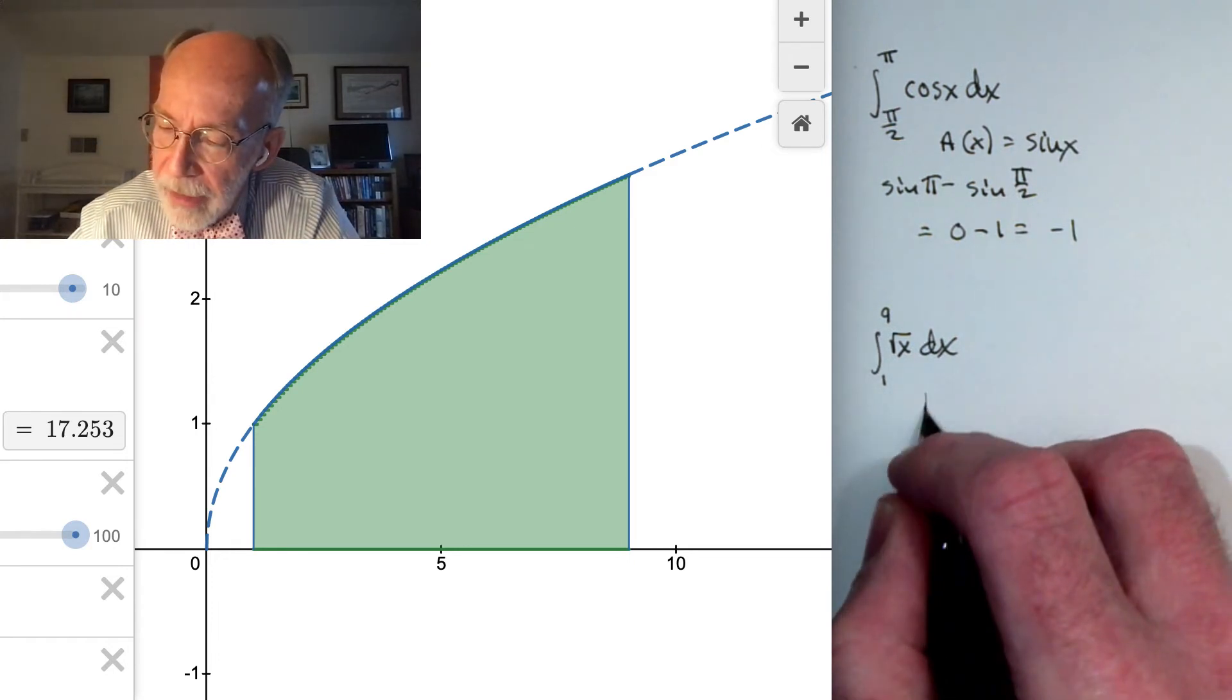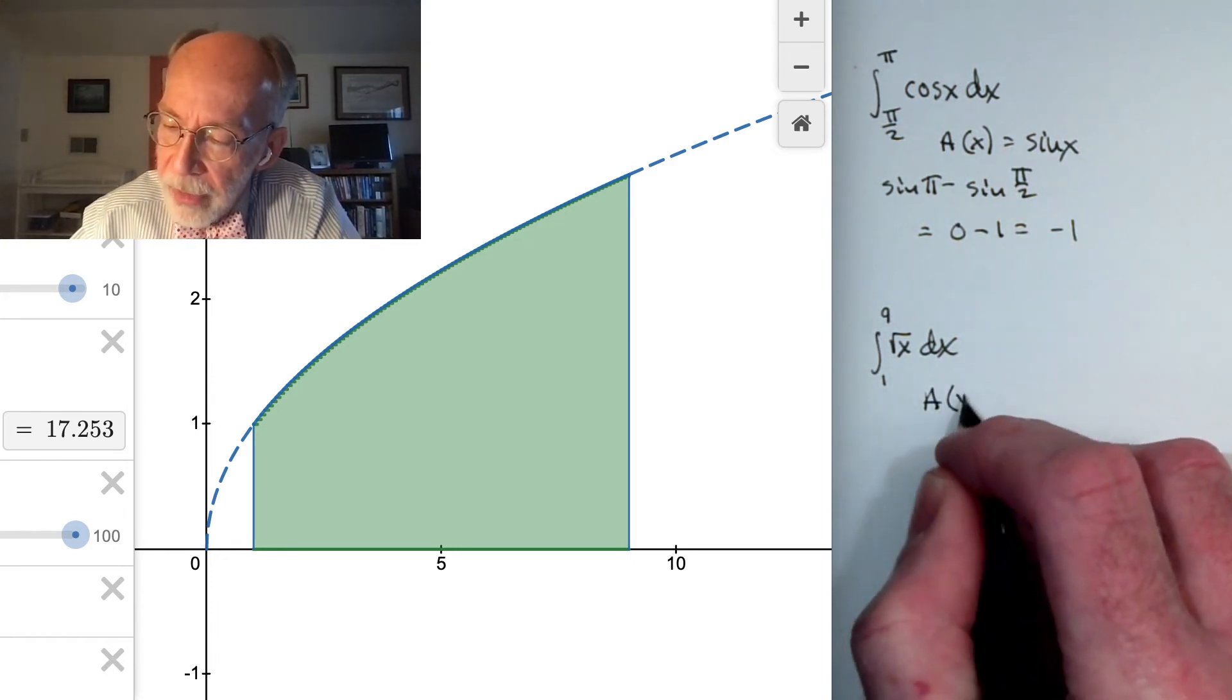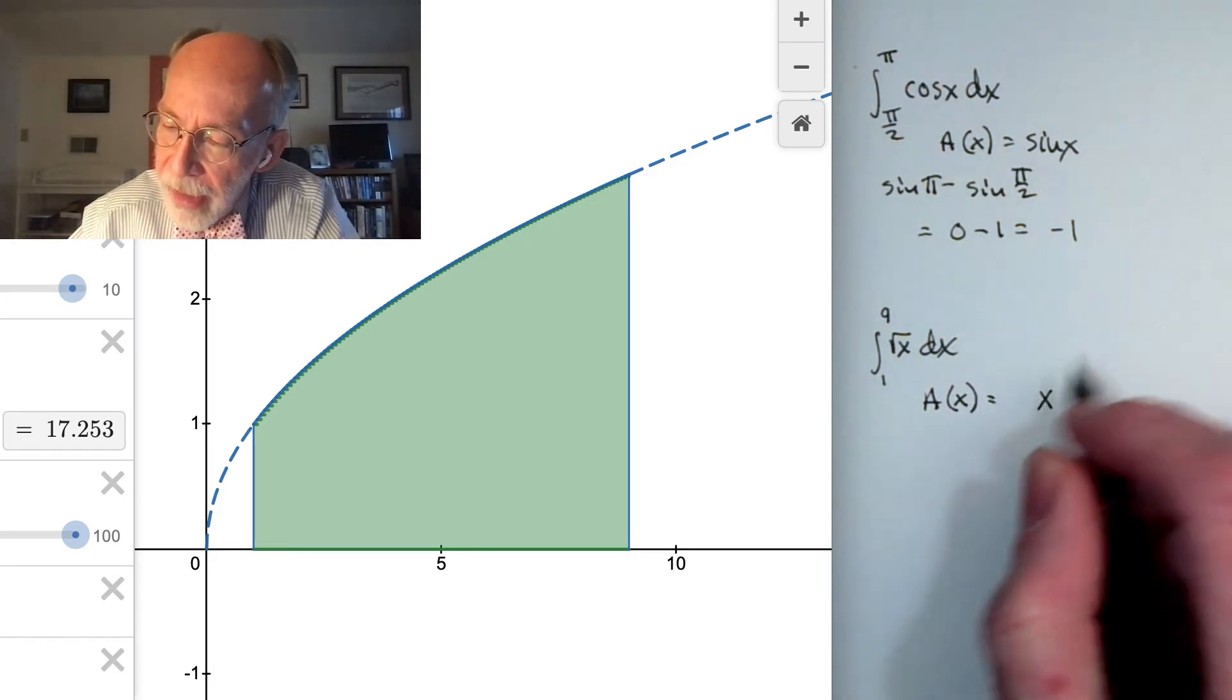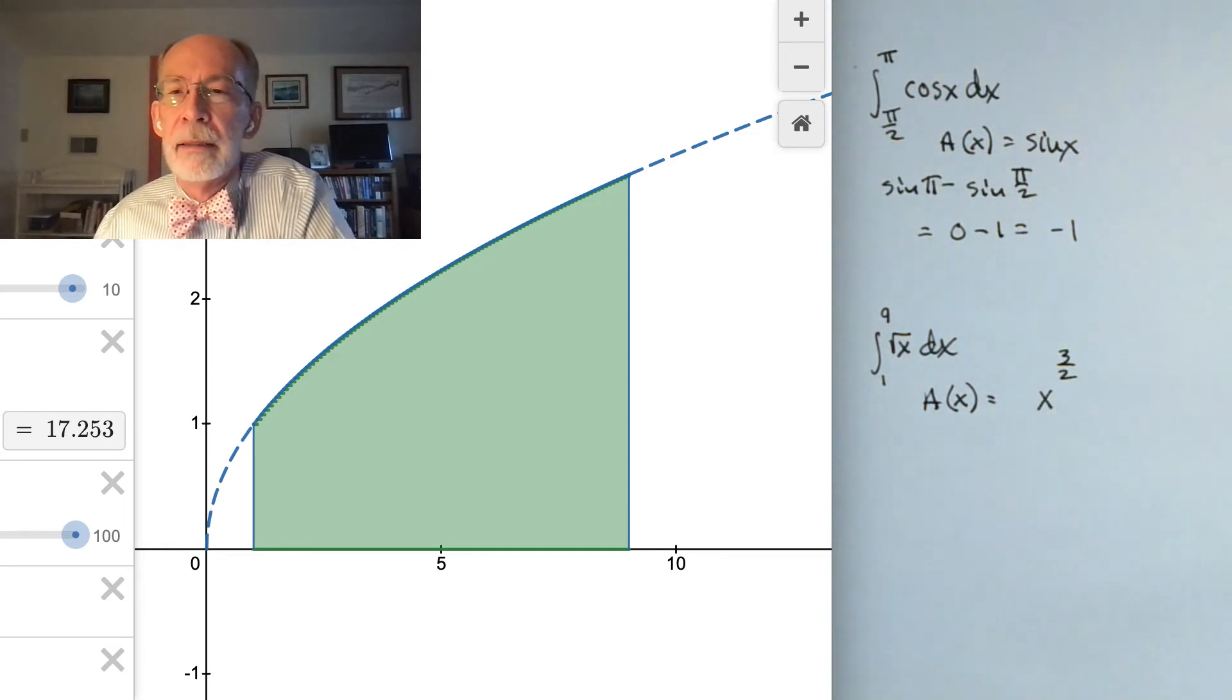So we would expect, in a reversal of that process, to increase the exponent by 1. So if it started out as a 1/2, I click it up by 1, I should get 3/2.